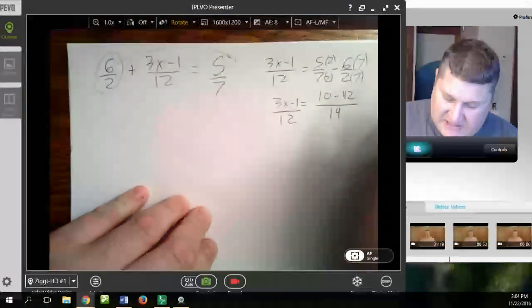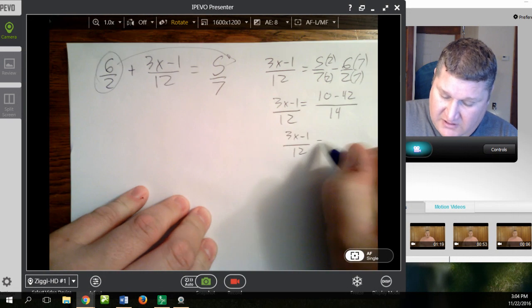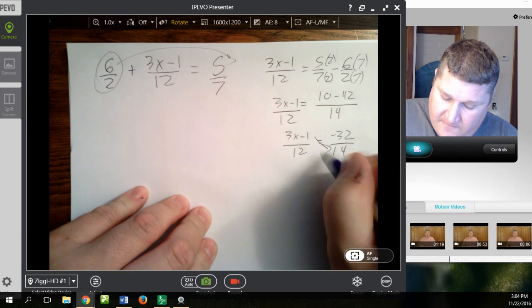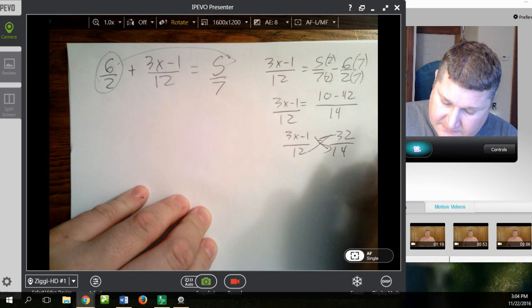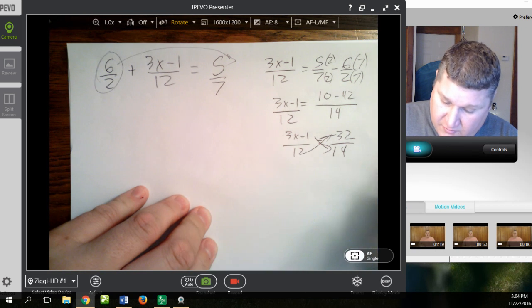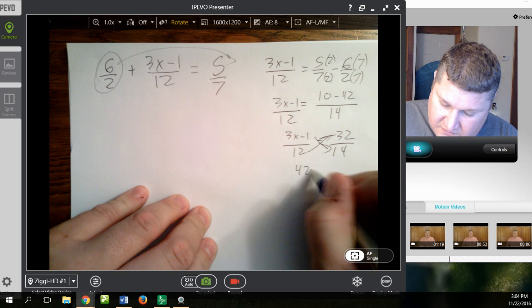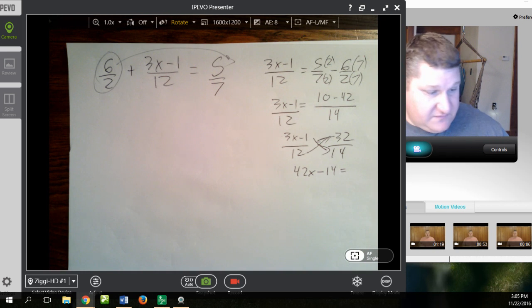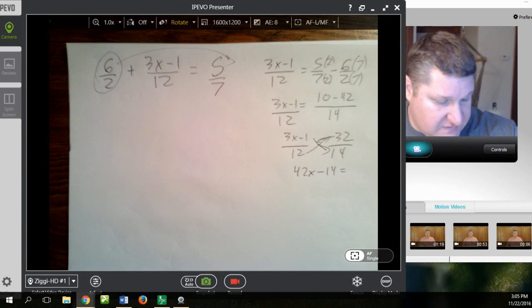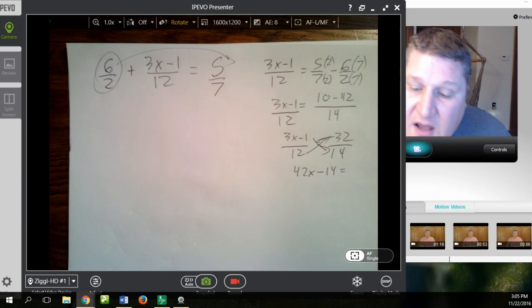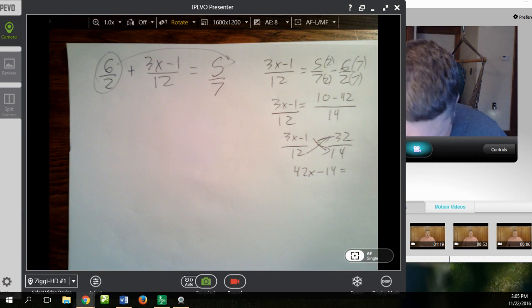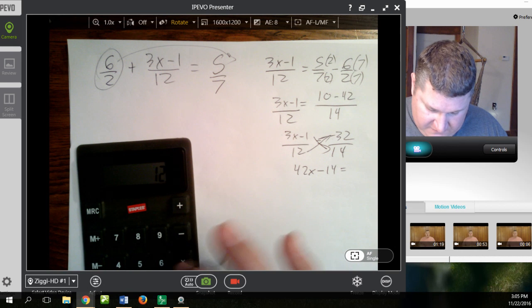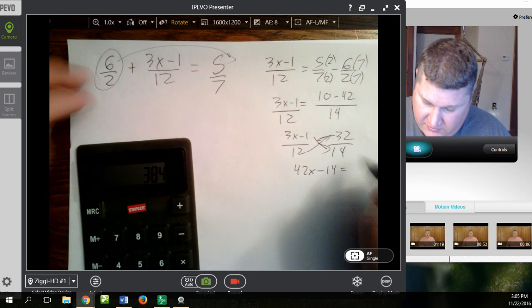And I get 10 minus 42 all over 14 equals 3x minus 1 over 12. So, in which case, I have 3x minus 1 over 12 equals negative 32 over 14. Cross-multiply. And I come up with, let's see here, 42x minus 14 equals, whoa, 12 times 14. 12 times 14. That's kind of a lot. And I don't have my, where's my calculator? Here it is. 12 times 32. 12 times 32. There we go, 384.